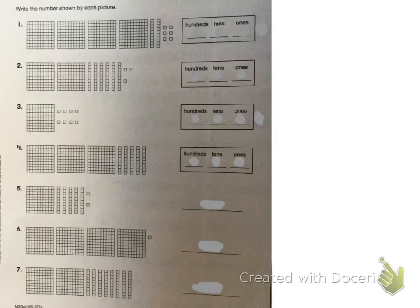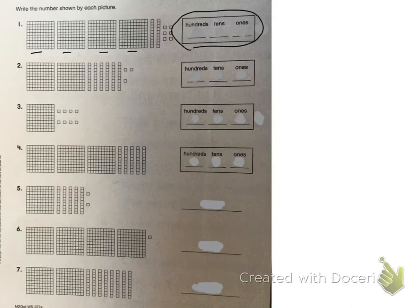Here I've got all of these pictures that show me different amounts, and we're just going to find really quick how much each of these is. On number one you can see that I have one, two, three, four hundreds blocks. So in the hundreds place I'm going to put a four.